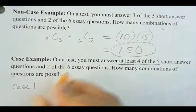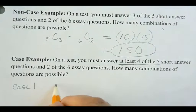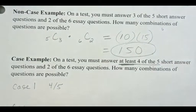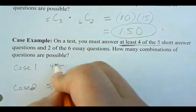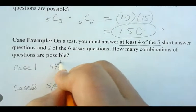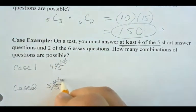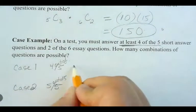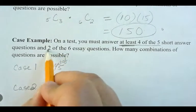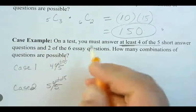Okay. So case 1, you answer 4 out of 5, or case 2, you answer 5 out of 5. That looks like an S. Make that a 5. Okay. So 4 out of 5, and this is 5 out of 5. And the whole time, for both, we have to answer two of the six essay questions.